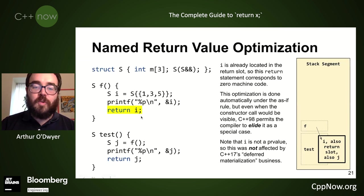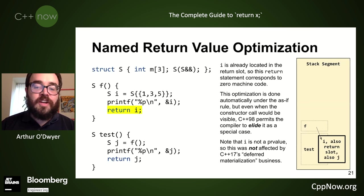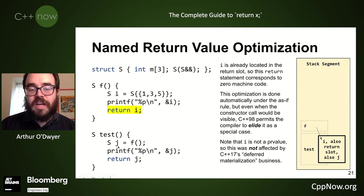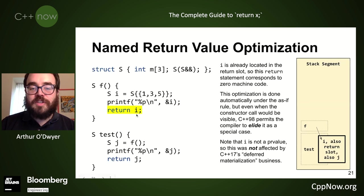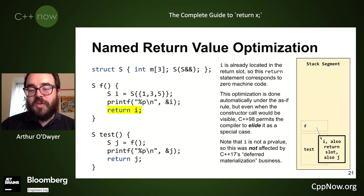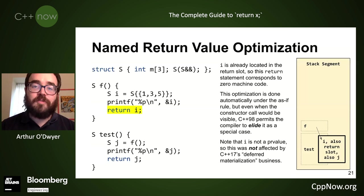This optimization is not done automatically under the as-if rule because this time we have a move constructor that would ordinarily have to be called. C++98 permits the compiler to elide it as a special case. Note that this was not affected by the C++17 rule changes — those affected the initialization of j from the result object, but they did not affect 'return i' because i is an lvalue, not a prvalue. So this is still copy elision, not something you get for free in C++17.